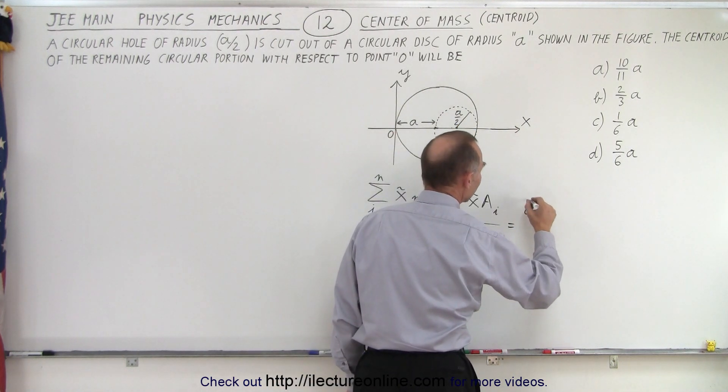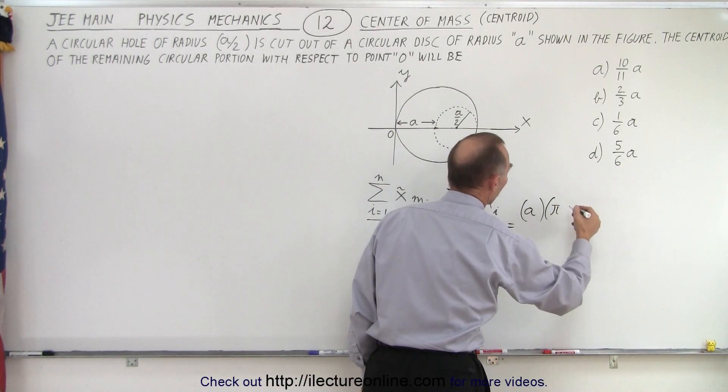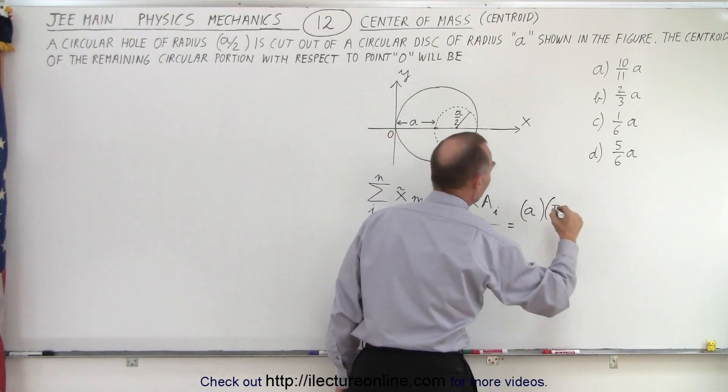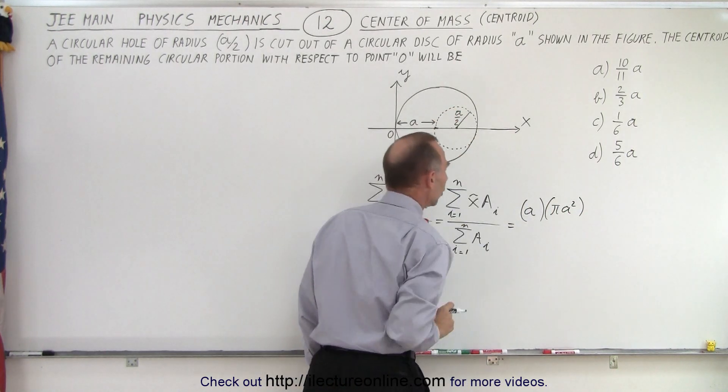So that would be a times the mass of the whole disk, which is the area, which would be pi r squared. Now, r would be a, so pi a squared. That would be the area of the disk before you cut out the hole.